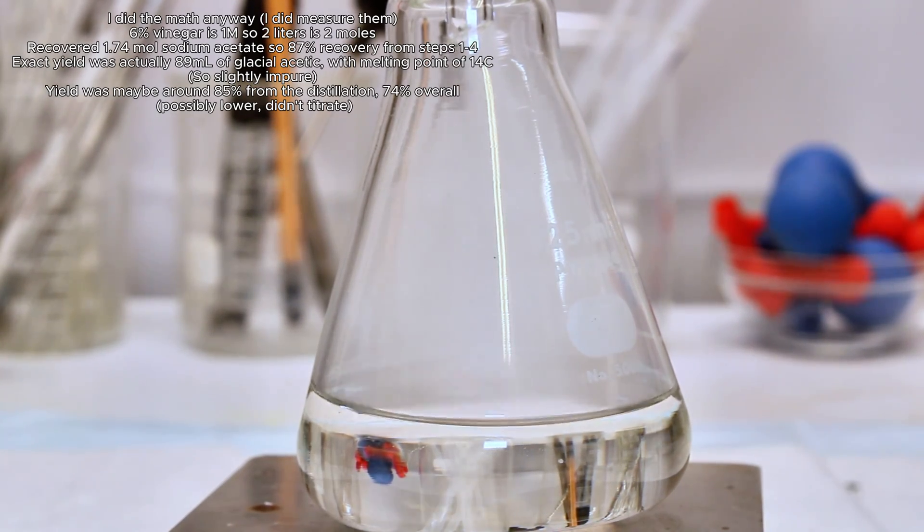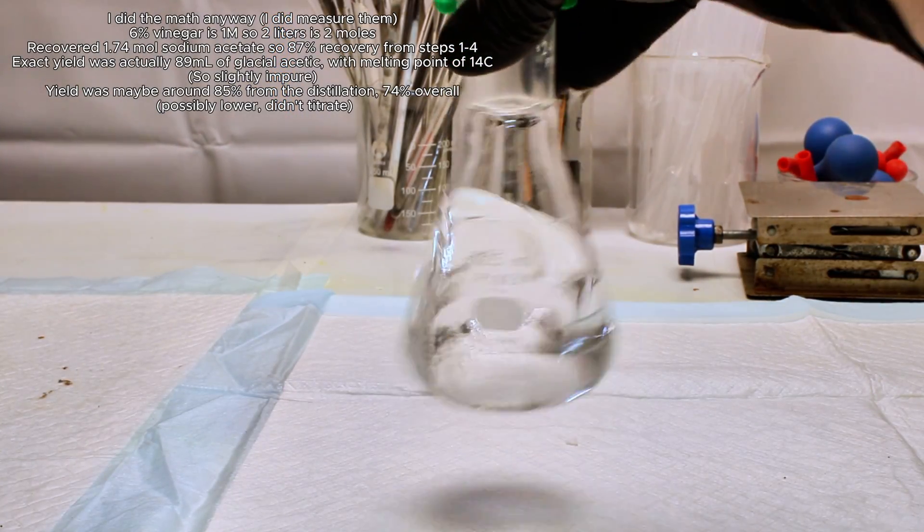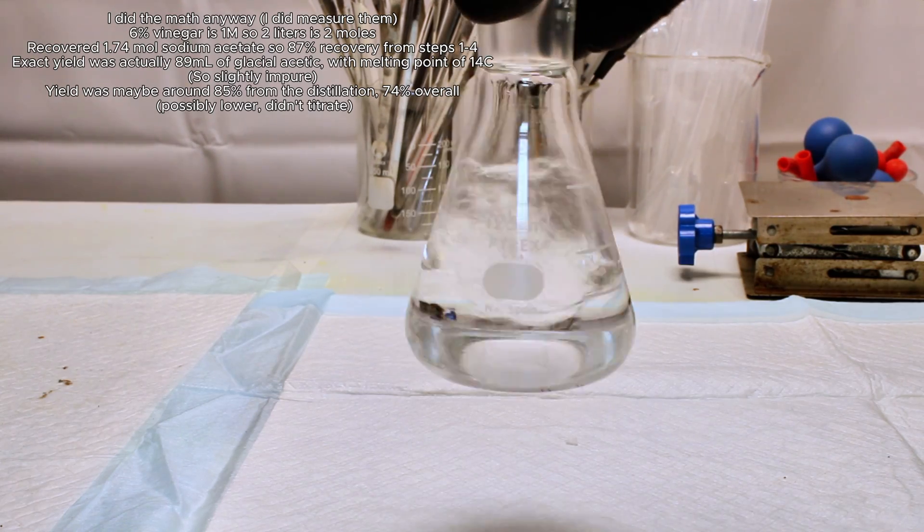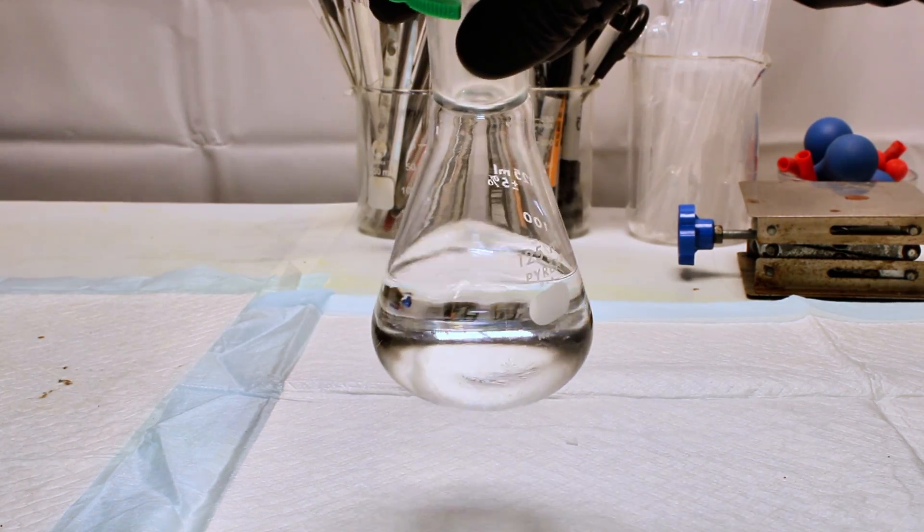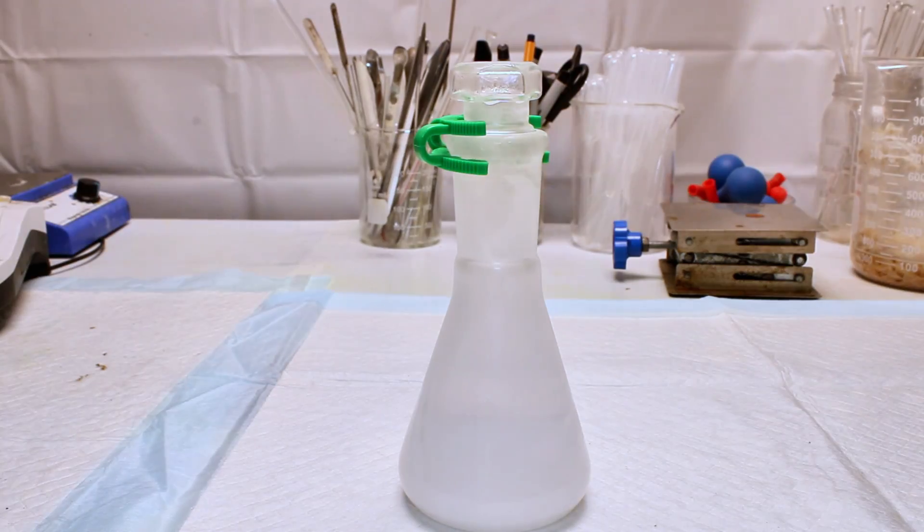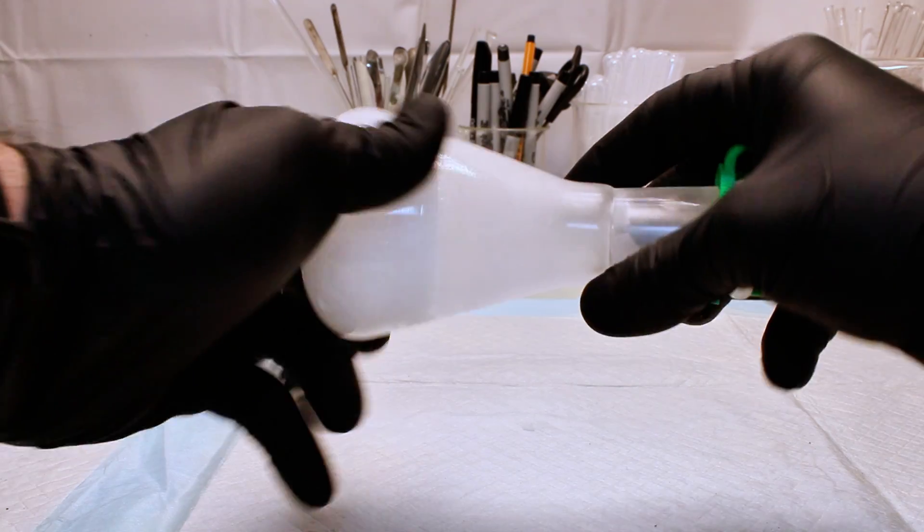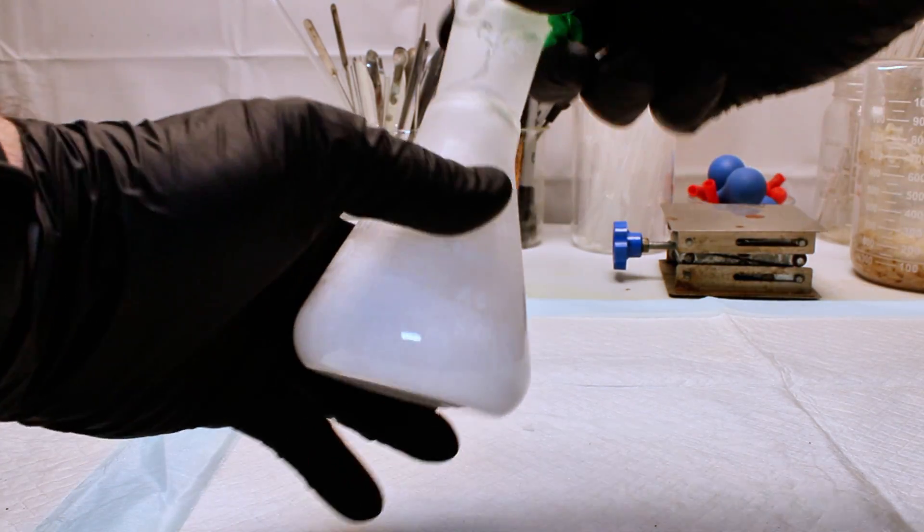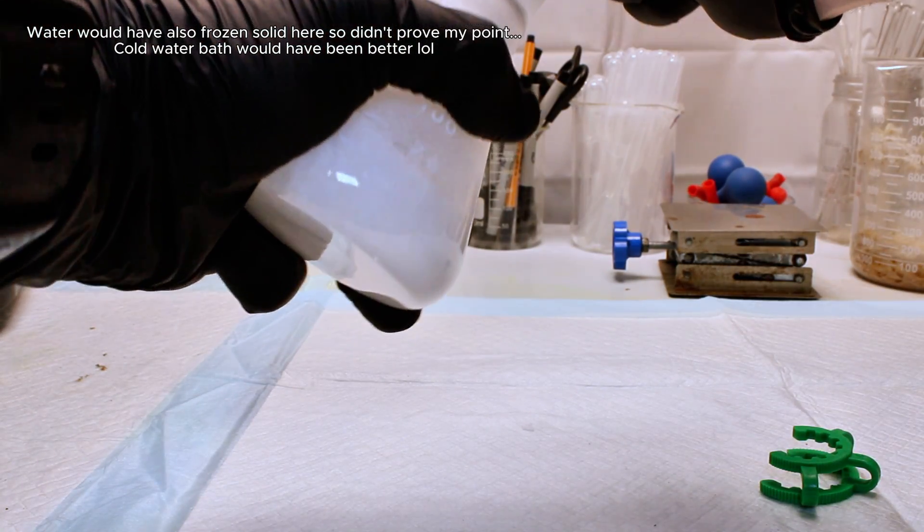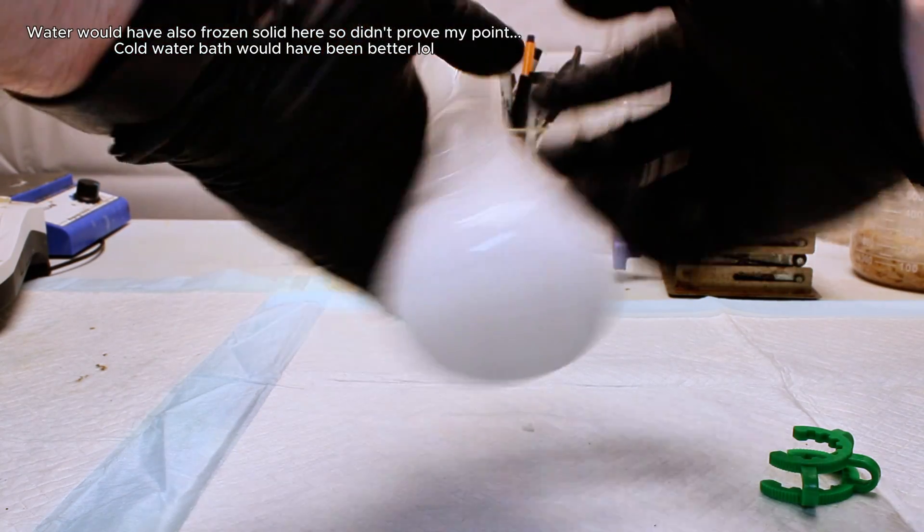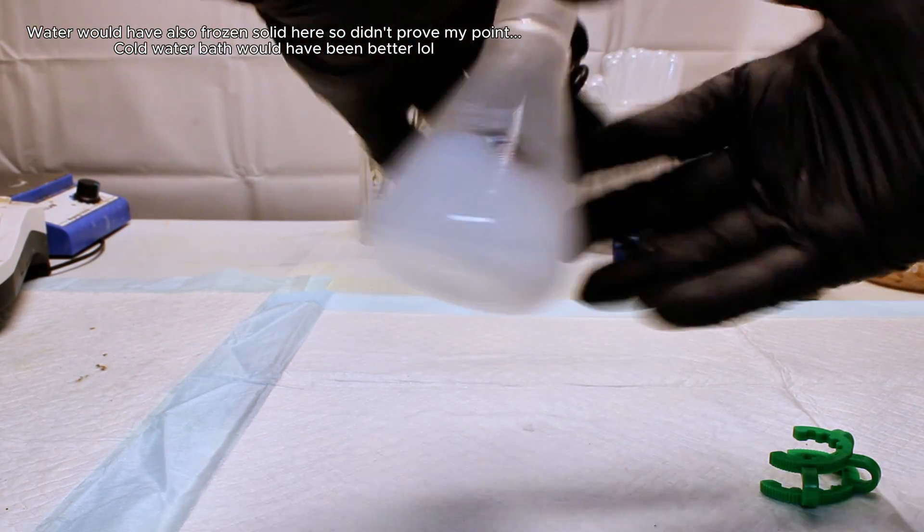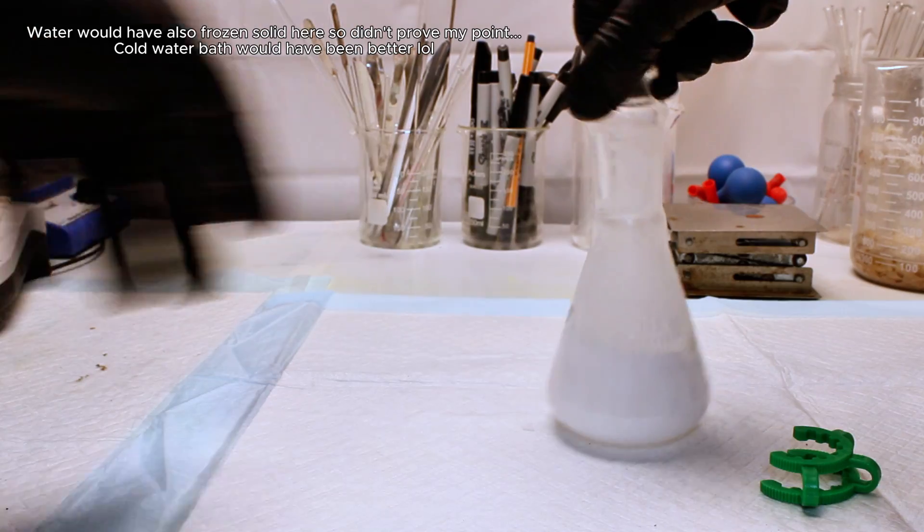Now, I didn't mention this earlier, but pure acetic acid is referred to as glacial because it has a fairly high melting point and will actually crystallize just below room temperature, or around 16 degrees Celsius. To demonstrate this, I went ahead and put the flask in the freezer for about an hour, and when I took it out, you can see that the whole thing had frozen solid, which I always think is cool unless I need to use acetic acid in the winter only to find the bottle is frozen, then it's really annoying.